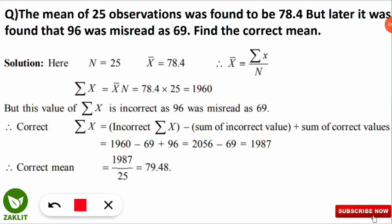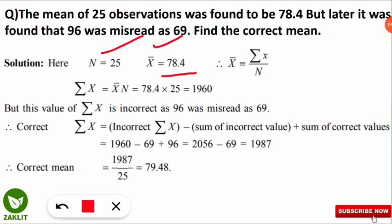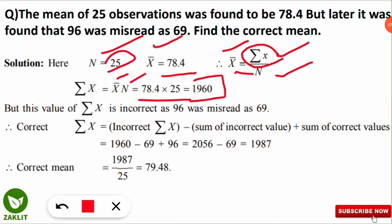Given: n = 25, and the (incorrect) mean = 78.4. From this, we can find the incorrect ΣX because Mean = ΣX / n. So ΣX = Mean × n = 78.4 × 25 = 1960. However, this summation is incorrect because 96 was misread as 69.